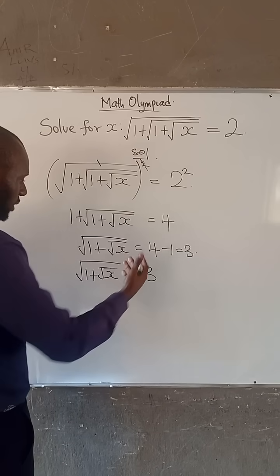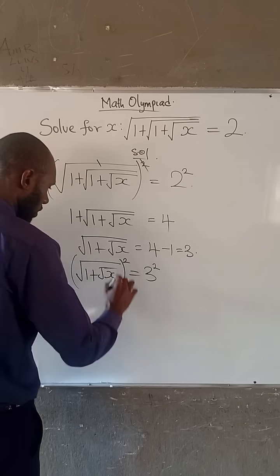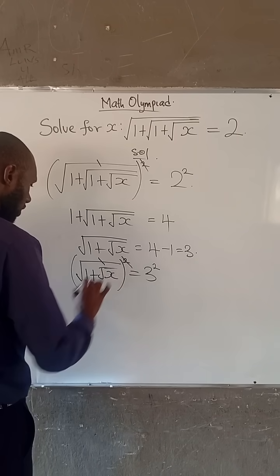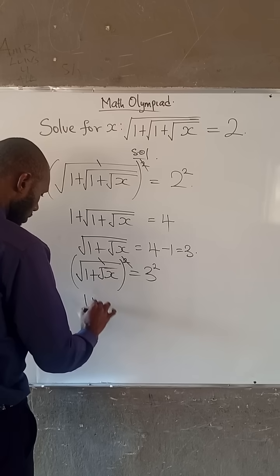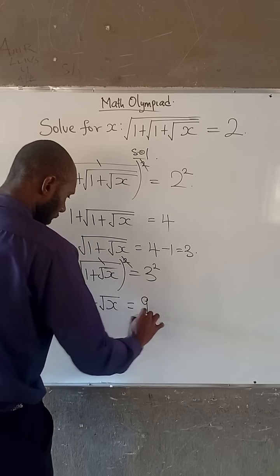Now again, we can square both sides. If we square both sides, the square will cancel the root. So we're left with 1 plus root x equals 9.